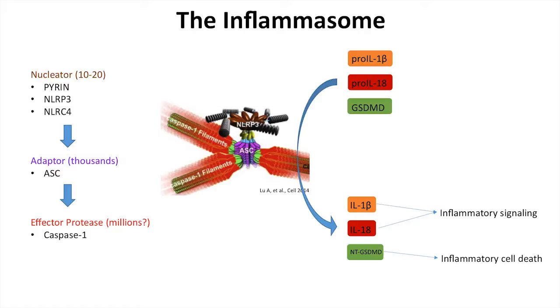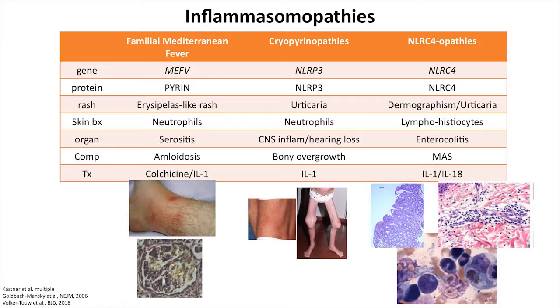This massive complex goes from a few activated molecules to something that is the size of an organelle within a cell, and it all happens very quickly. Obviously it's there for host defense. Once that inflammasome is nucleated, it takes substrates — pro-IL-18, pro-IL-1-beta, and gasdermin D — and cleaves them to their activated forms. IL-1-beta and IL-18 go on to do inflammatory signaling, and the N-terminus of gasdermin D helps induce pores and induces inflammatory cell death.